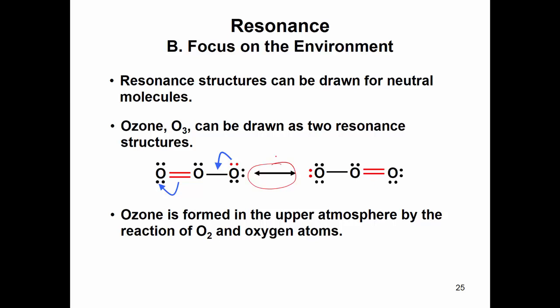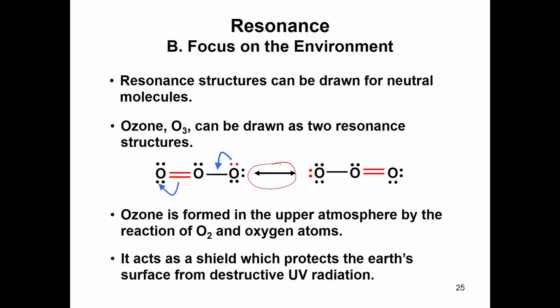Both of these are correct, but the true structure is a hybrid of both of these. So ozone is in our upper atmosphere, and it protects us from UV radiation. And so it has a resonance structure. So it shows it there, both of these.